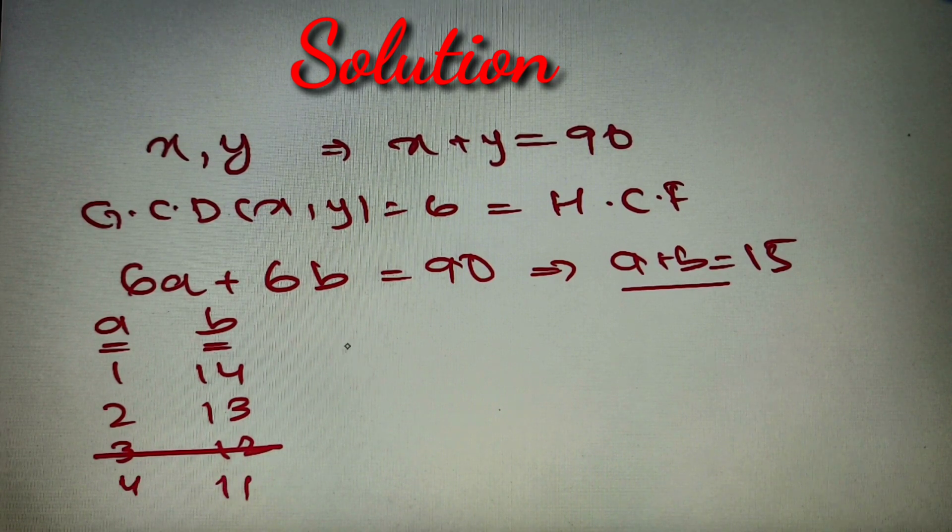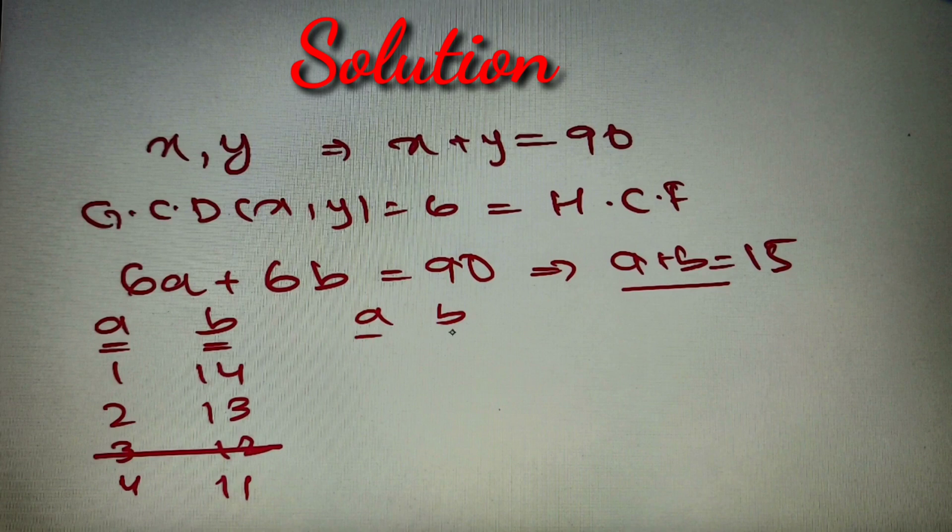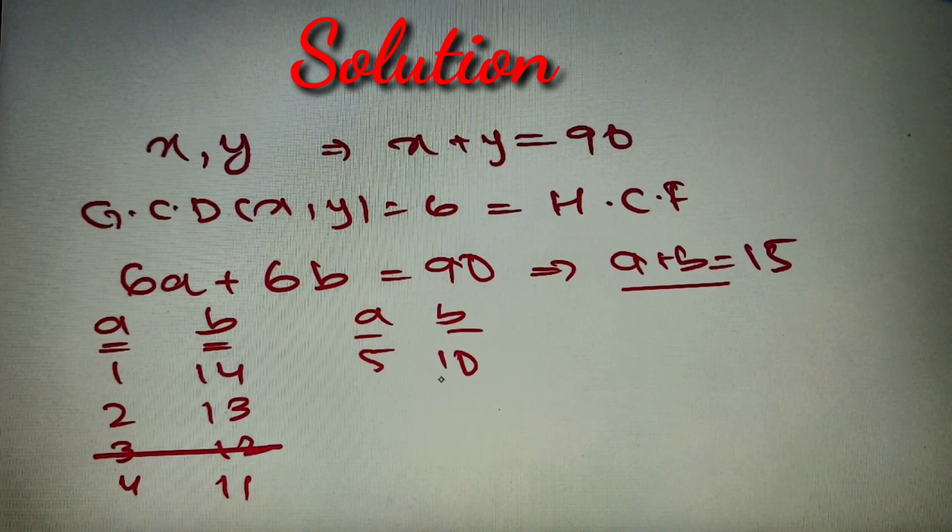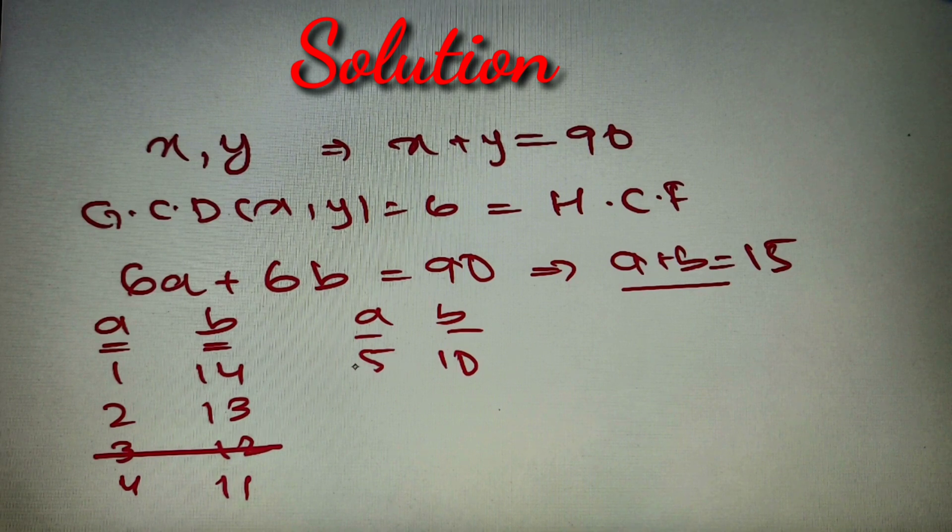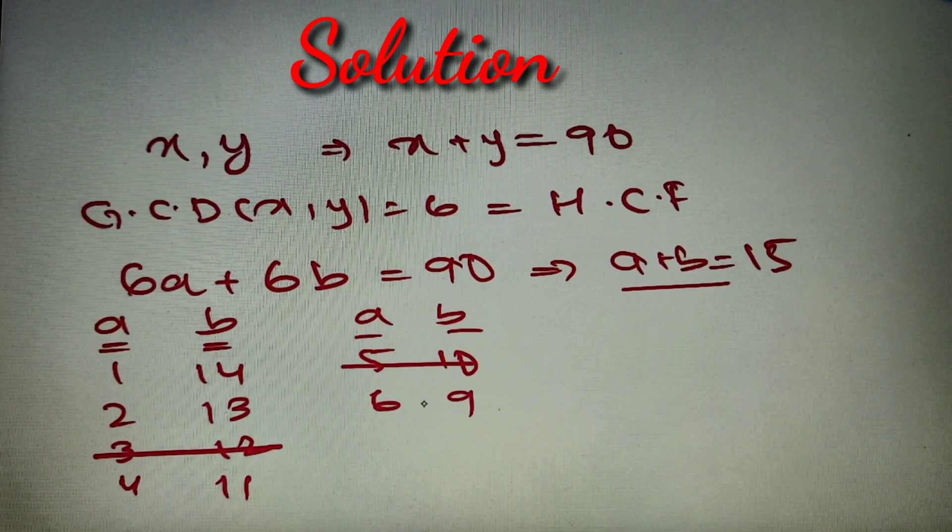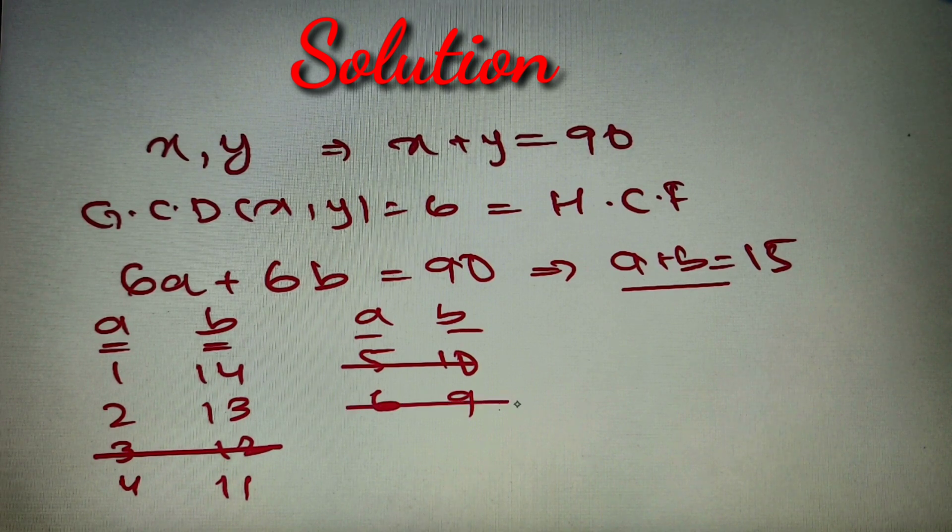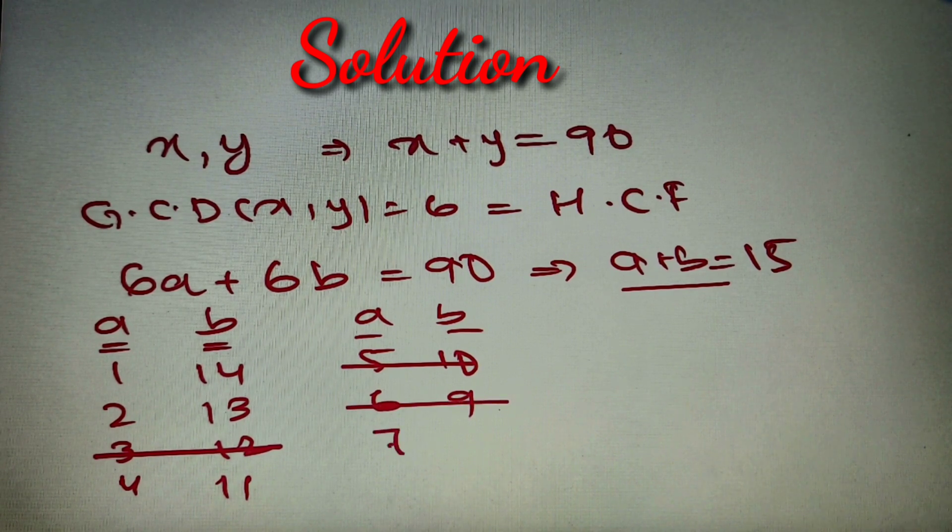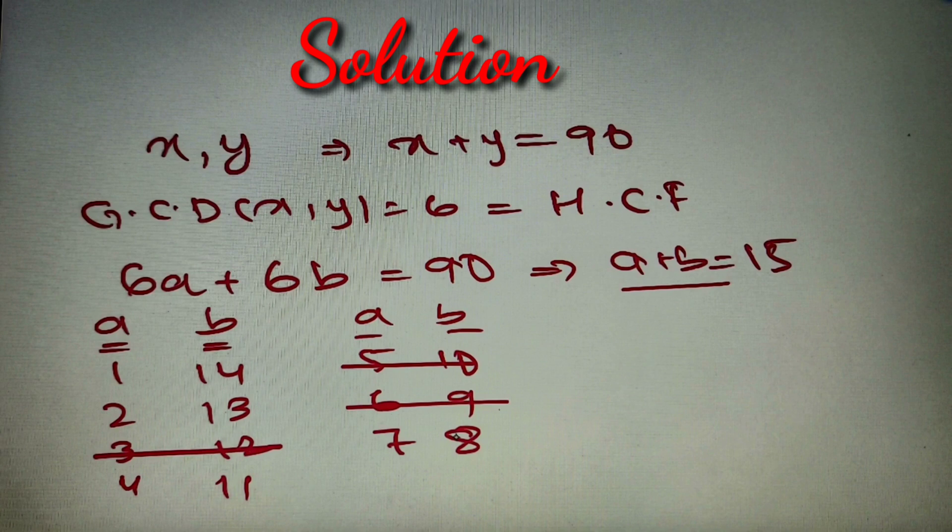a = 4 and b = 11. For our next case we'll have a = 5 and b = 10. Again we have a common factor of 5, so this case is also deleted. Next is 6, 9. Again we have a common factor of 3, so this is also deleted. Our last and final case is 7, 8.